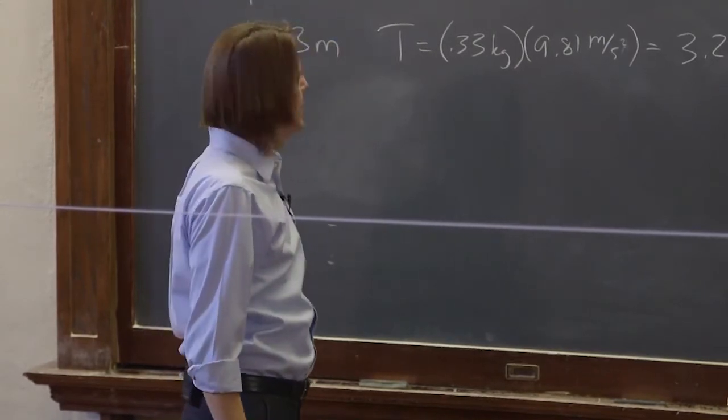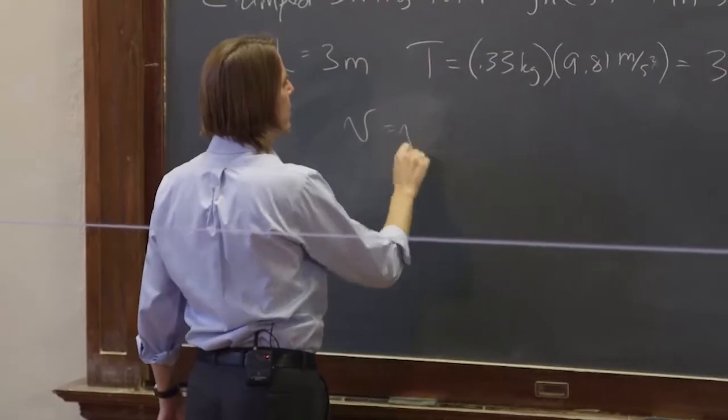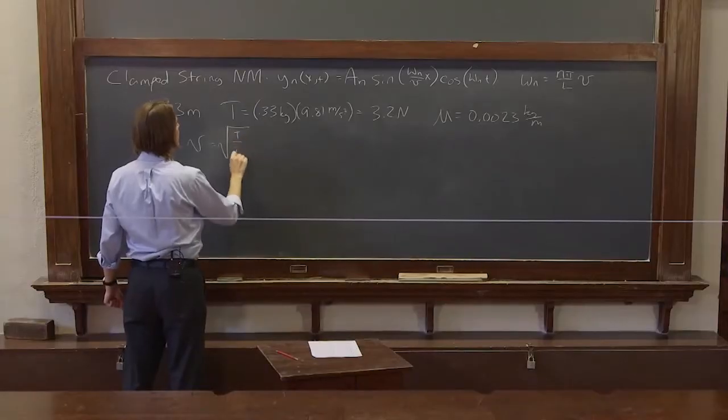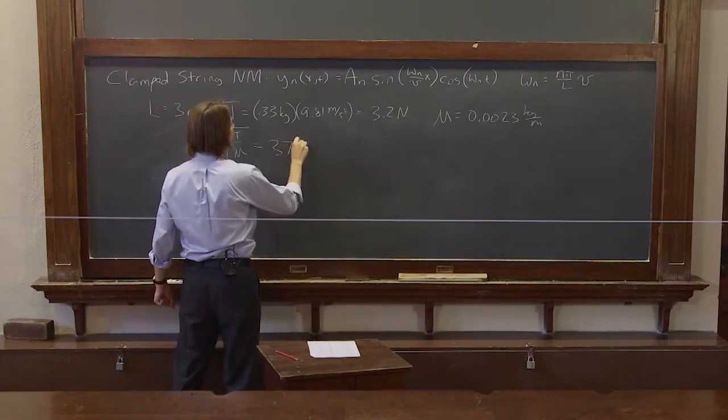So if we see what those numbers give us, we can calculate the velocity of a wave on this string is T over mu, and it comes to about 37 meters per second. That's pretty fast.